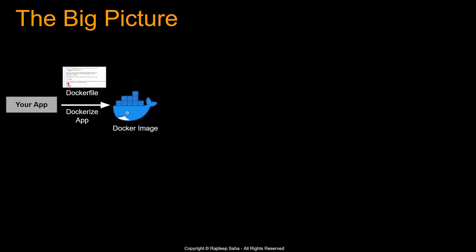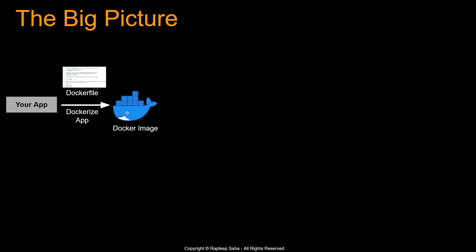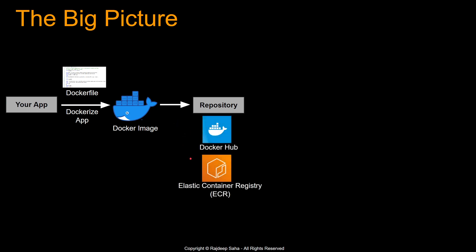Let's understand the big picture — this slide is very important, so make sure you understand the flow. You start with your app, maybe written in Java or Python or any other language. Then we have this file called Dockerfile, which dockerizes your app — it says what dependencies, configuration, and runtime your application needs, and it has a command to create the Docker image. Once you have the Docker image, you save it somewhere called a repository — similar to saving a jar file for a Java application. Popular Docker image repositories include Docker Hub and Elastic Container Registry. Then your Docker image gets deployed into a container, and this is when your app starts running.